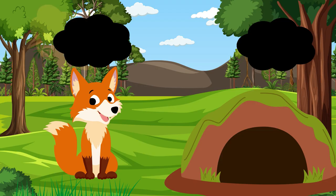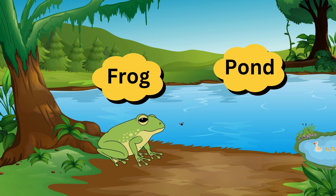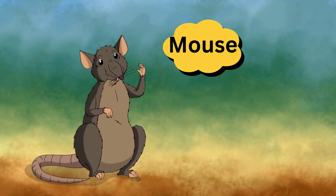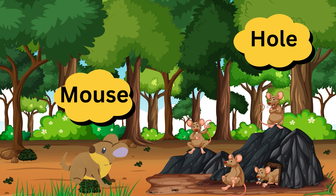Fox. Fox lives in a hollow. Fox — hollow. Frog. Frog lives in a pond. Frog lives in a pond. Frog — pond. Mouse. Mouse lives in a hole. Mouse lives in a hole. Mouse — hole.